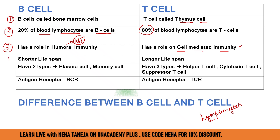If we compare the life span, then B-cells have a shorter life span. If you talk about B-cells, they have approximately 5–6 weeks, though mature B-cells have a longer life span. If we talk about T-cells, we see a range of 30–160 days. So as compared to B-cells, T-cells have a comparatively longer life span.